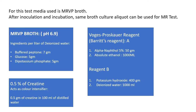For this test, the media used is MRVP broth — the same broth used for the Methyl Red test. After inoculation and incubation, you can divide the same broth into two test tubes and proceed for both the MR test and VP test. The MRVP broth has a pH of around 6.9 and contains buffered peptone 7g, glucose 5g, and dipotassium phosphate 5g.